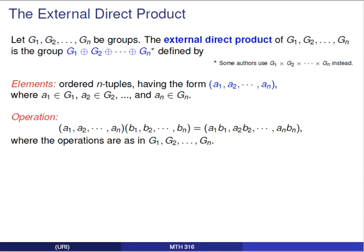The external direct product is defined in the following way. Suppose you have groups G1, G2, and so on up through Gn. The external direct product is written as G1 ⊕ G2 ⊕ ... ⊕ Gn. Both notations — whether you use the circle-plus or the times symbol — mean the direct product of these groups.